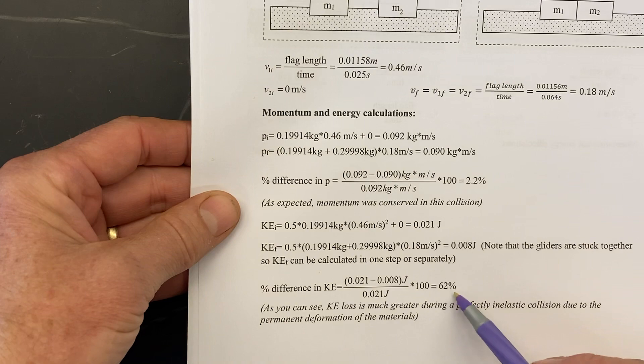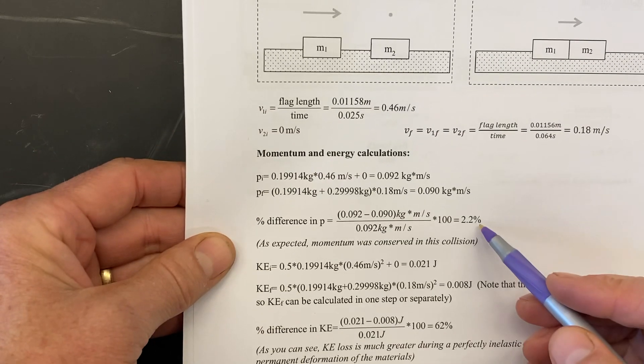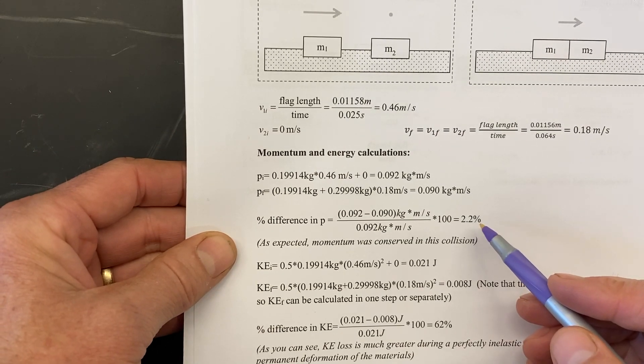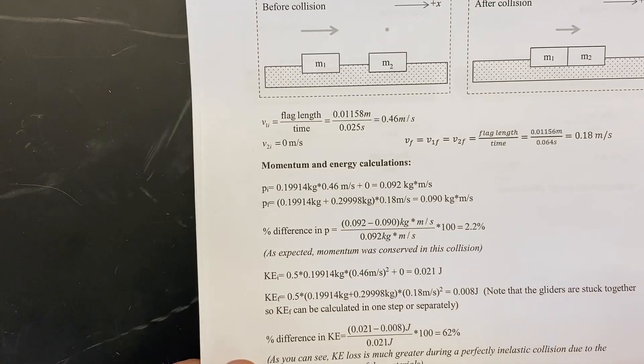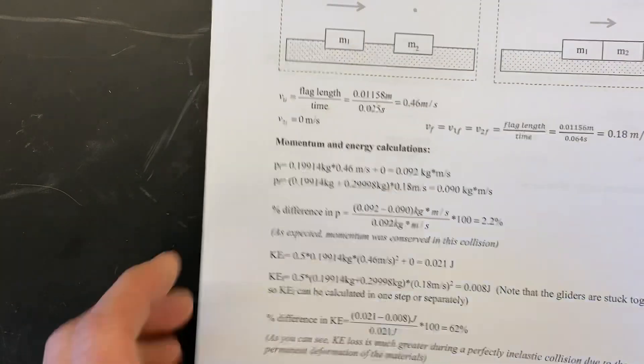You can see a large amount of kinetic energy loss. You can see the momentum was about the same before and after as we would expect for any case where f net is equal to zero.